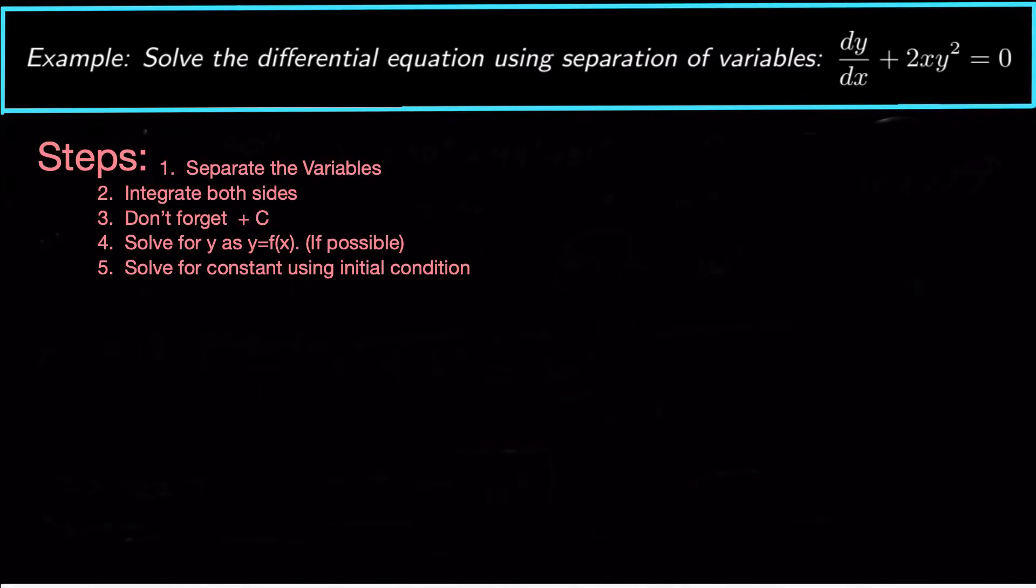The method really just has a couple of steps. The steps are separate the variables, put the x on one side, put the y on the other side. Then you're going to integrate both sides with respect to the variable that's on that side. So on the x side we'll integrate with respect to x, on the y side we integrate with respect to y.